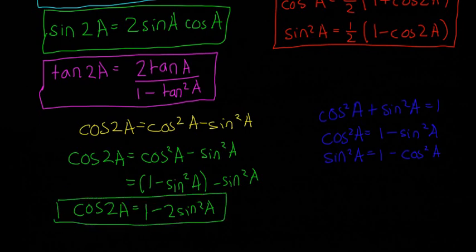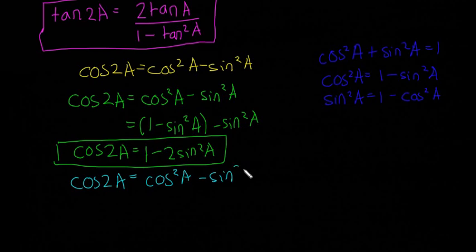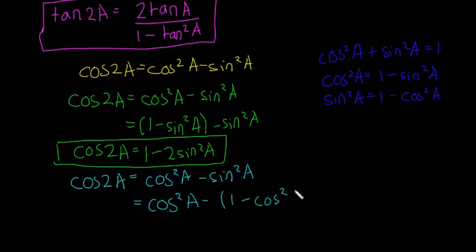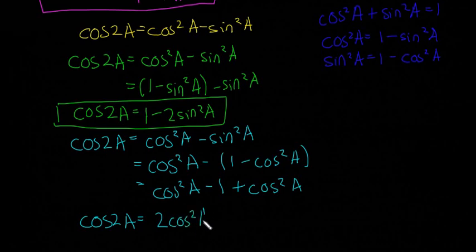For the second derivation, starting again with cos 2a is equal to cos squared a minus sine squared a. This time, instead of sine squared, I'm going to substitute 1 minus cos squared a. So we get cos squared a minus (1 minus cos squared a), which gives us cos squared a minus 1 plus cos squared a. That leaves us with cos 2a is equal to 2 cos squared a minus 1.